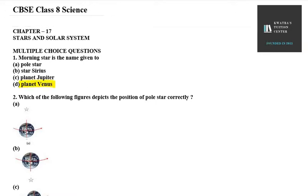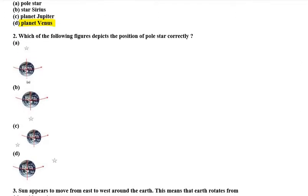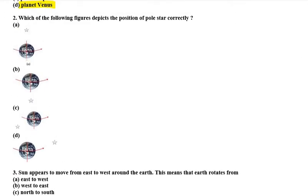Question number 2 is: which of the following figures depicts the position of the pole star correctly? Out of these 4, we are getting to know that our pole star is the best one. So the best one is actually A.